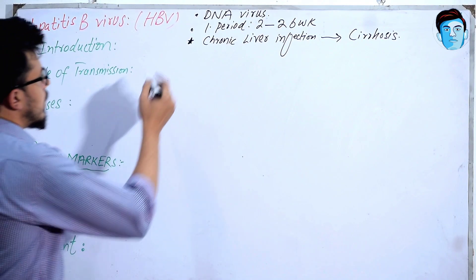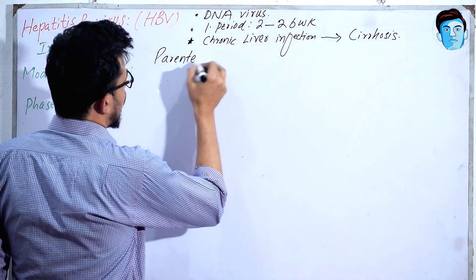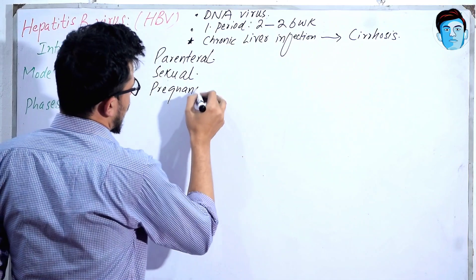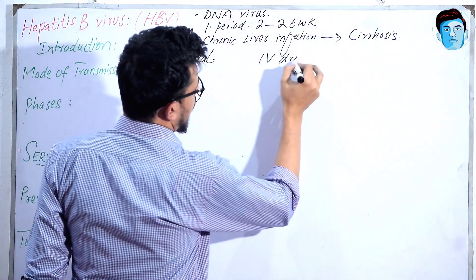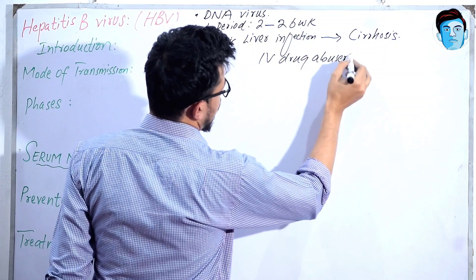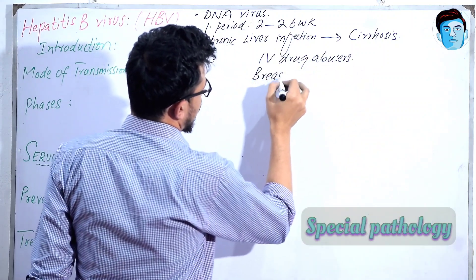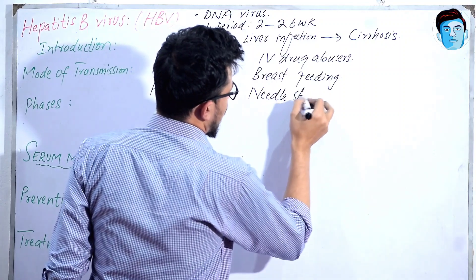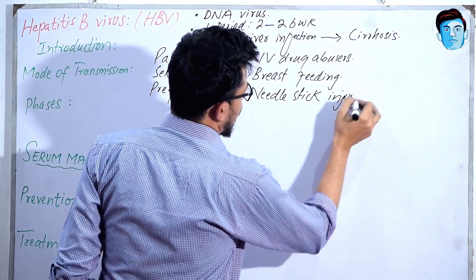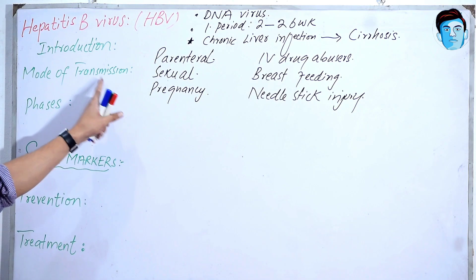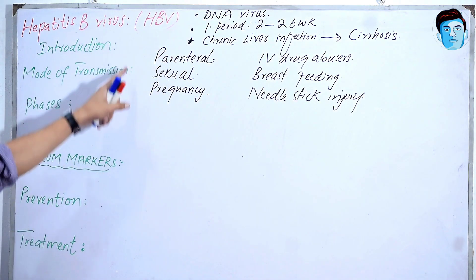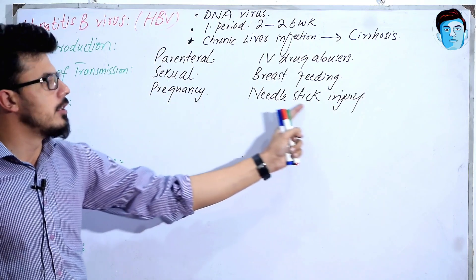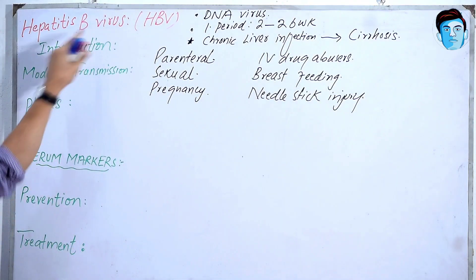Now how does it get transmitted? It is transmitted by the parenteral route, by sexual contact, by pregnancy, intravenous drug abusers, breastfeeding, and needle stick injury.